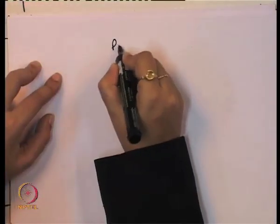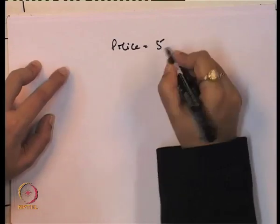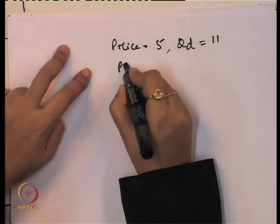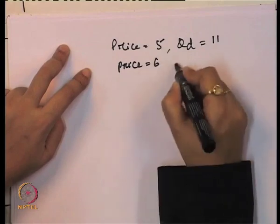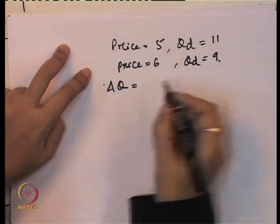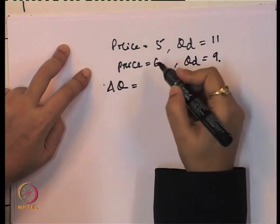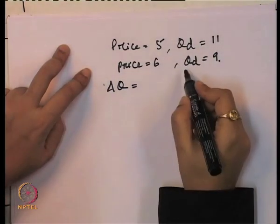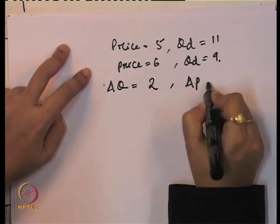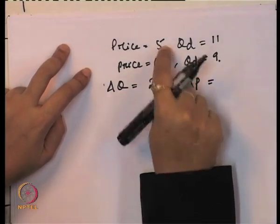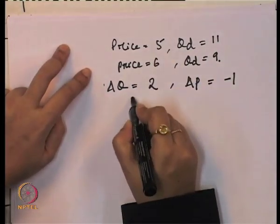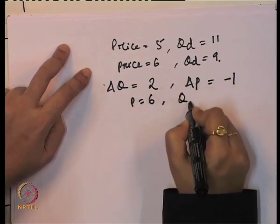In the first case, when the movement is from price 5 to 6, the original price is 5 and the original quantity demanded is 11. The movement is from price 5 to 6 and quantity demanded from 11 to 9. Now, what is the change in Q when the price moves from 6 to 5? Quantity demanded changes from 9 to 11, so ΔQ is 2. The change in price — decreased from 6 rupees to 5 rupees — so ΔP is minus 1.